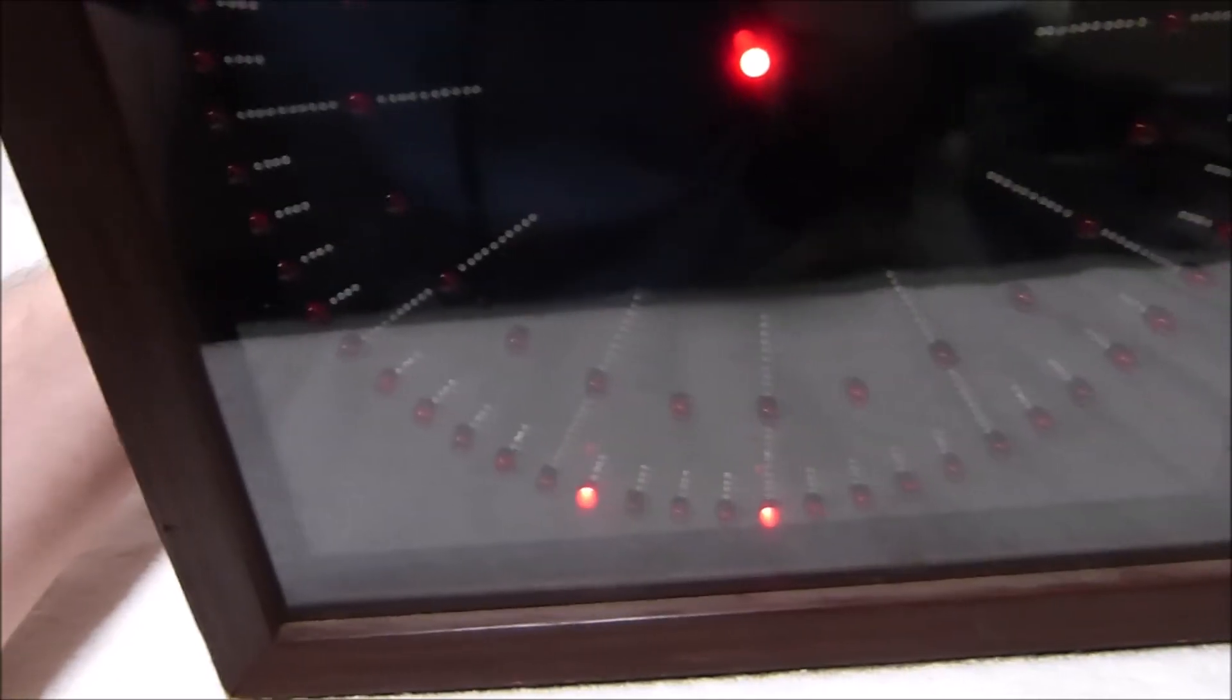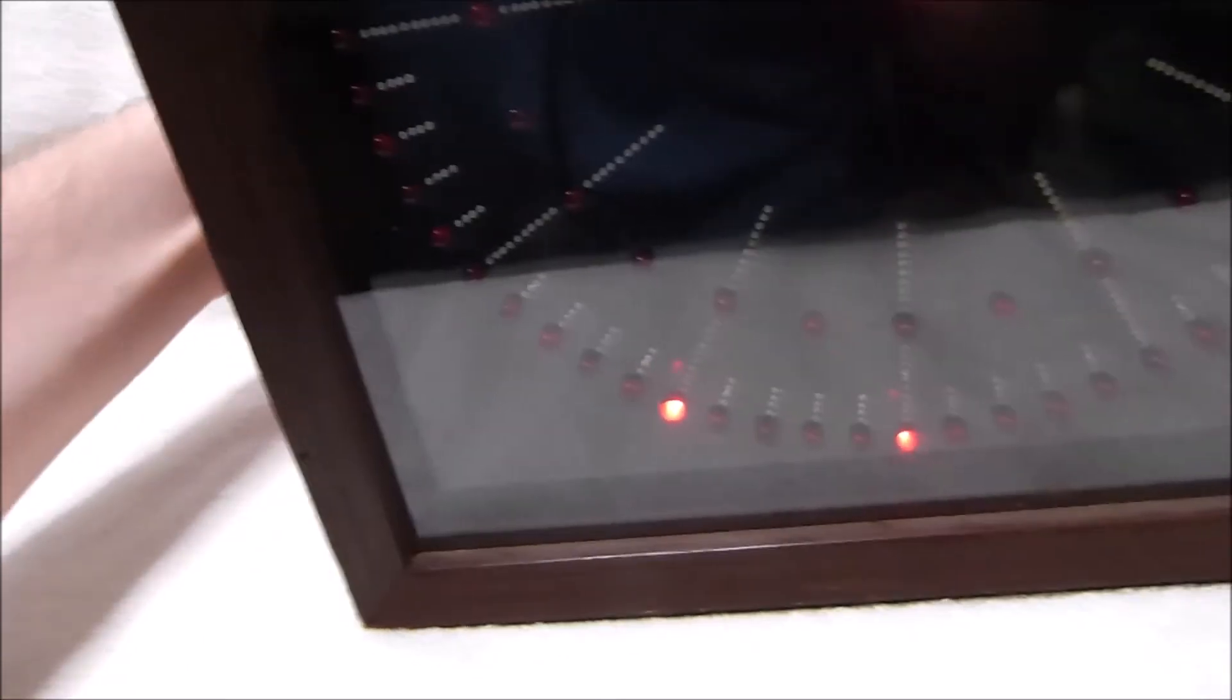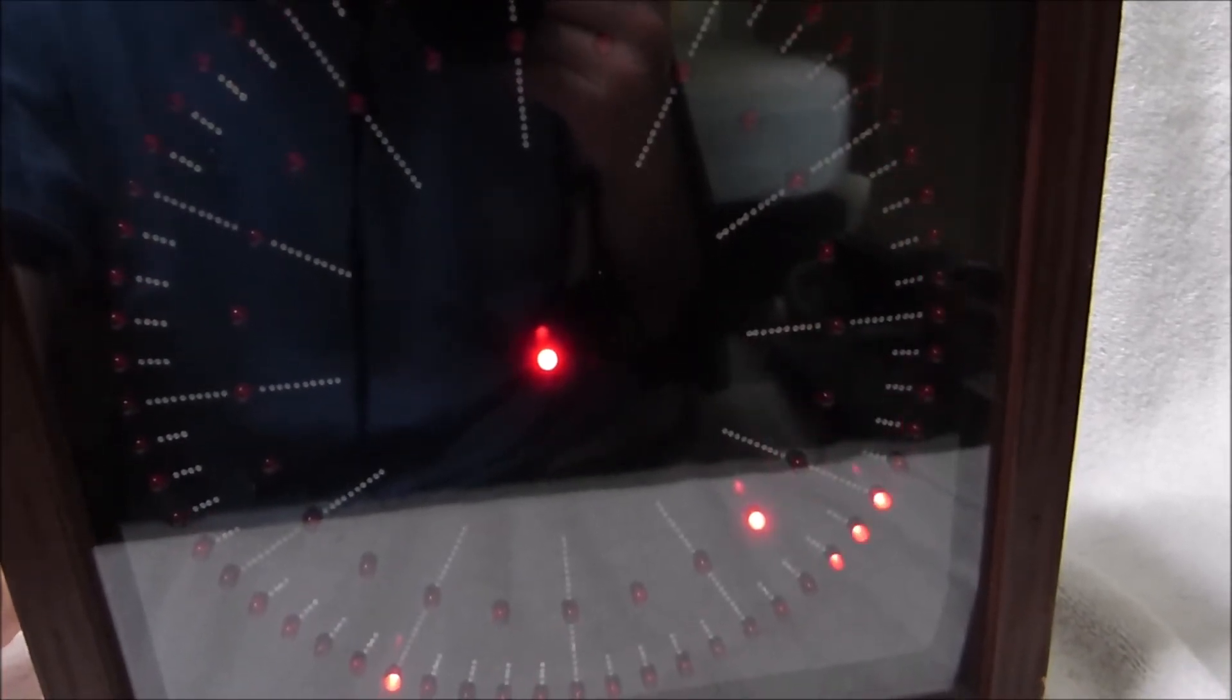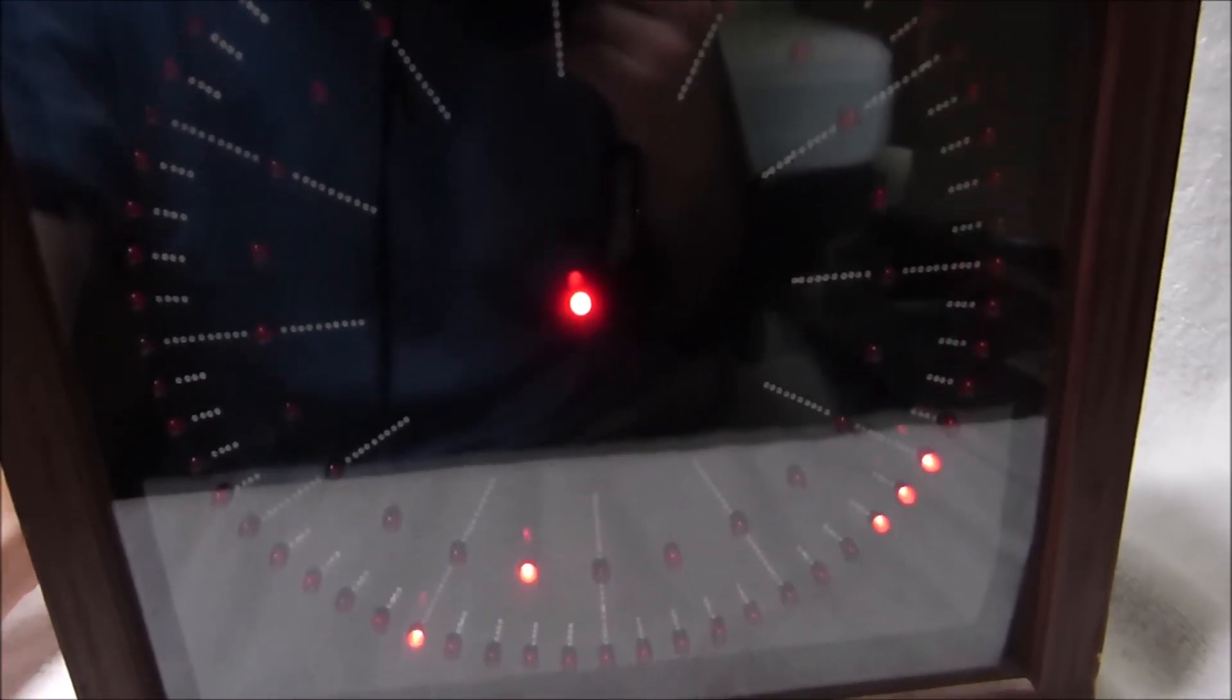Now the two set controls don't do anything unless the hold control is also set. Now I'll put the hold control on, which stops the seconds down there, and I'll flick the set switch. That's the fast set, so you can see the minutes are rapidly advancing, along with the hours.